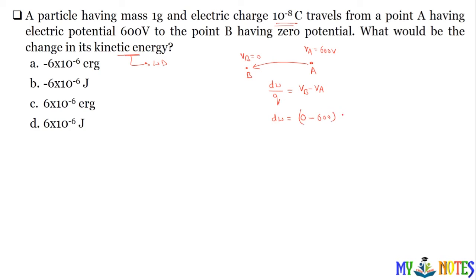Q equals 10 to the power minus 8. To work done equals minus 600 into 10 to the power minus 8 equals minus 6 into 10 to the power minus 6 joule. Yeh aapka answer hai: minus 6 into 10 to the power minus 6 joule. Erg mein nahi hoga — 1 joule is equal to 10 to the power 7 erg hoti hai. Yeh note kar lo.